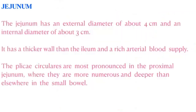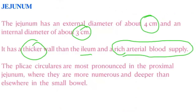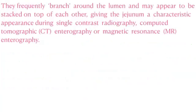The jejunum has an external diameter of four centimeters and an internal diameter of three centimeters — thicker wall than the ileum. The plicae circularis are most pronounced in the proximal jejunum, where they are most numerous and deeper than elsewhere in the small bowel. They frequently branch around the lumen and may appear stacked on top of each other, giving the jejunum a characteristic appearance during single-contrast radiography, CT colonoscopy, and MR enterography.